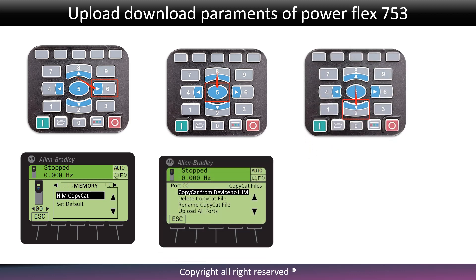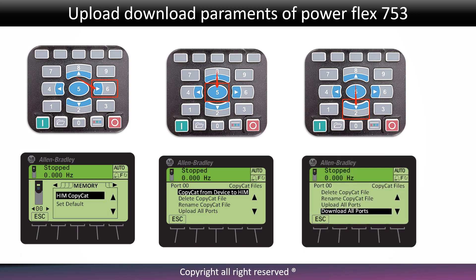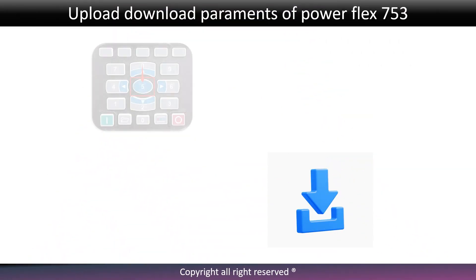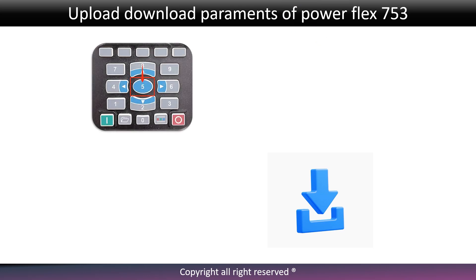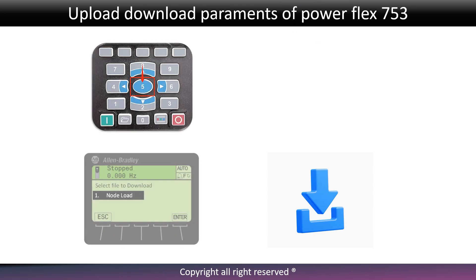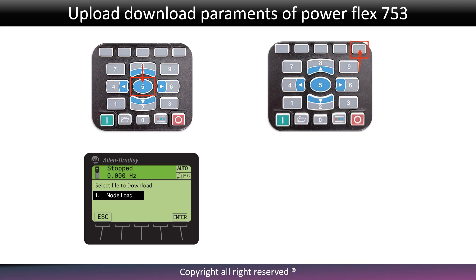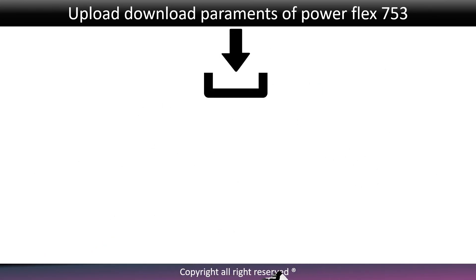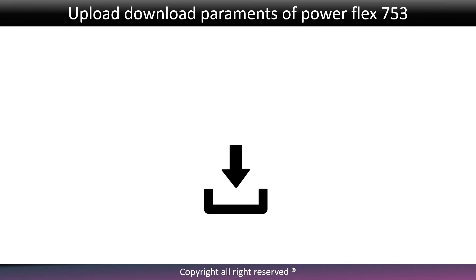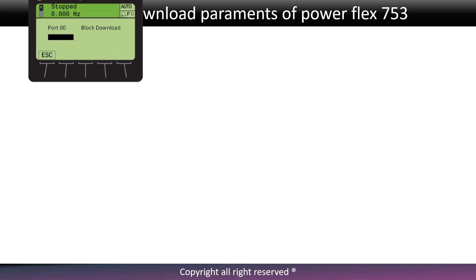Press the down side arrow button and select download all ports option. Press 5 and select the file to download. Press enter button to start the download.